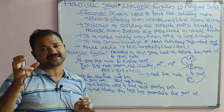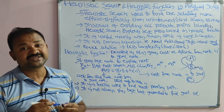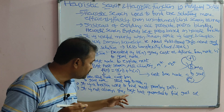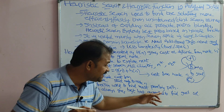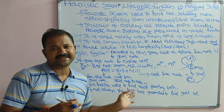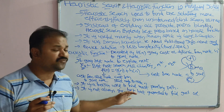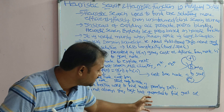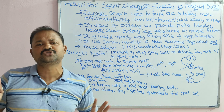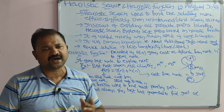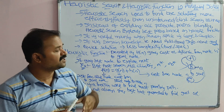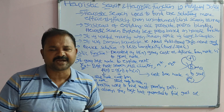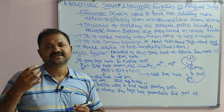The heuristic function is used to find the best path. It does not always guarantee finding the absolute best solution, but it guarantees producing a good solution. These are the important points regarding heuristic search and heuristic function in artificial intelligence. Please like the video, subscribe to the channel, and share it with your friends.